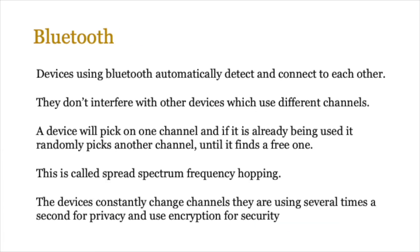Bluetooth devices automatically detect and connect to each other without interfering with other devices on different channels. With 79 channels available, if one channel is already in use, the device randomly picks another until it finds a free one. This is called spread spectrum frequency hopping — devices constantly change channels several times a second for privacy and also use encryption for security. Even within a single second, the frequency might change three or four times to ensure nobody else can listen in and capture the data.